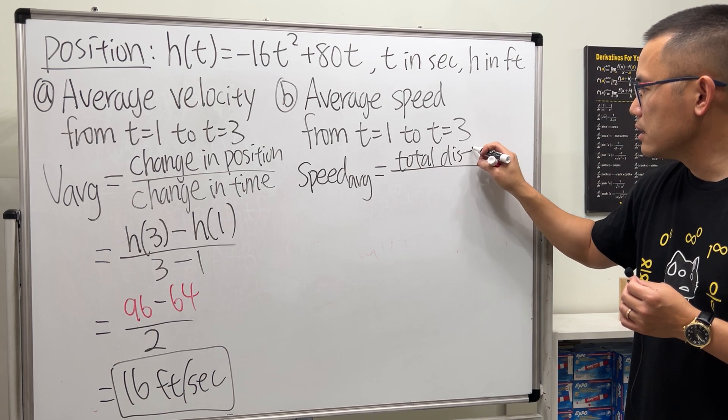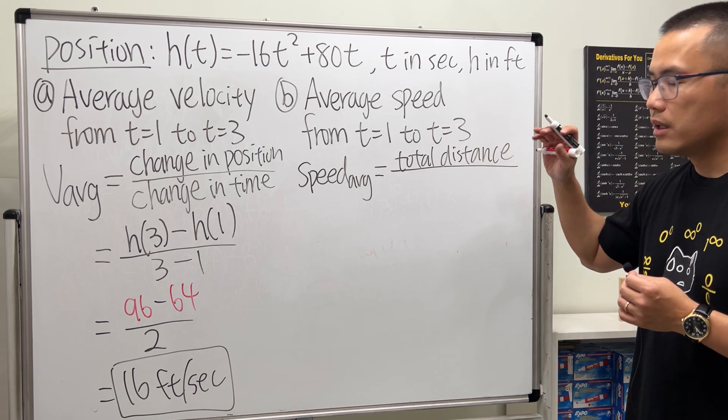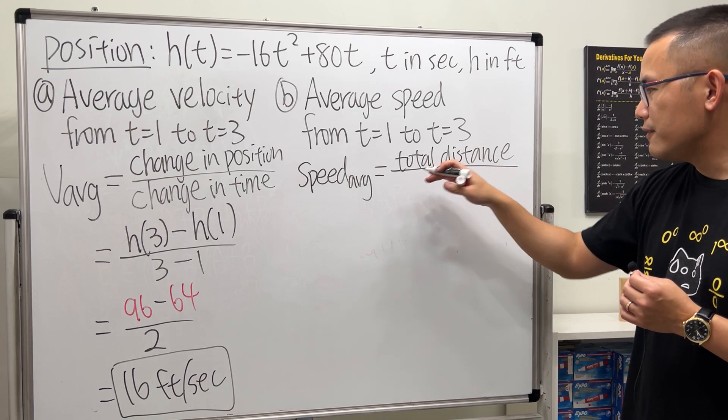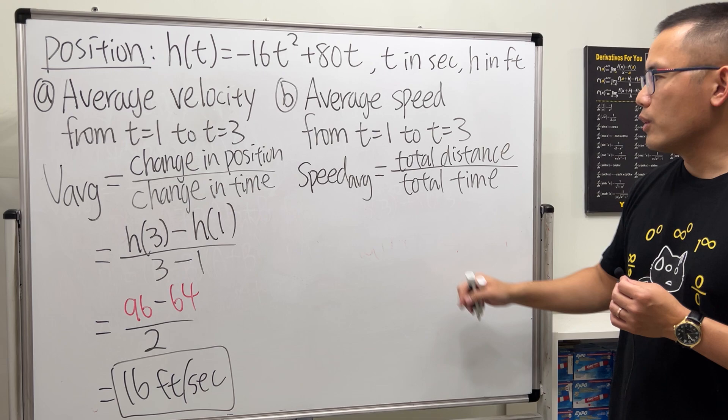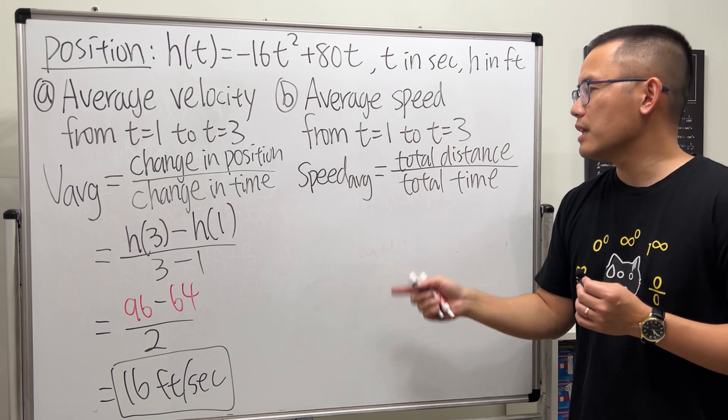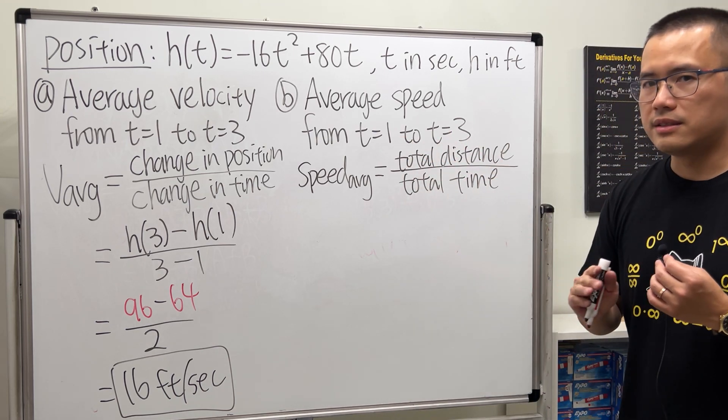What we need is the total distance traveled during this time interval, so right here I'll just write down the total distance traveled, and divided by the total time that we needed. Well, from 1 to 3 is of course just 2 seconds, but the total distance is the tricky part.